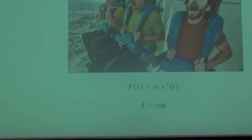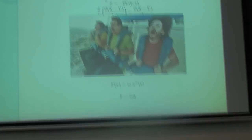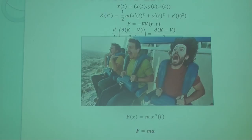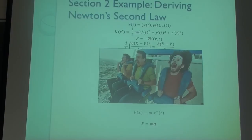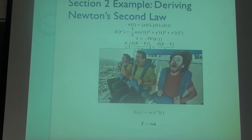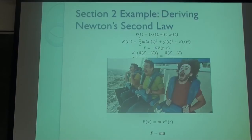There may be a circular argument in using Newton's second law to prove Newton's second law, but I still think it's remarkable that something so fundamental to all of science falls out of this mathematics. The picture of a free-fall ride is a reminder of the conditions we're considering: the main energy exchange is between potential and kinetic energy, with no energy loss to friction. Does anyone have questions before we move on to the next type of functional?